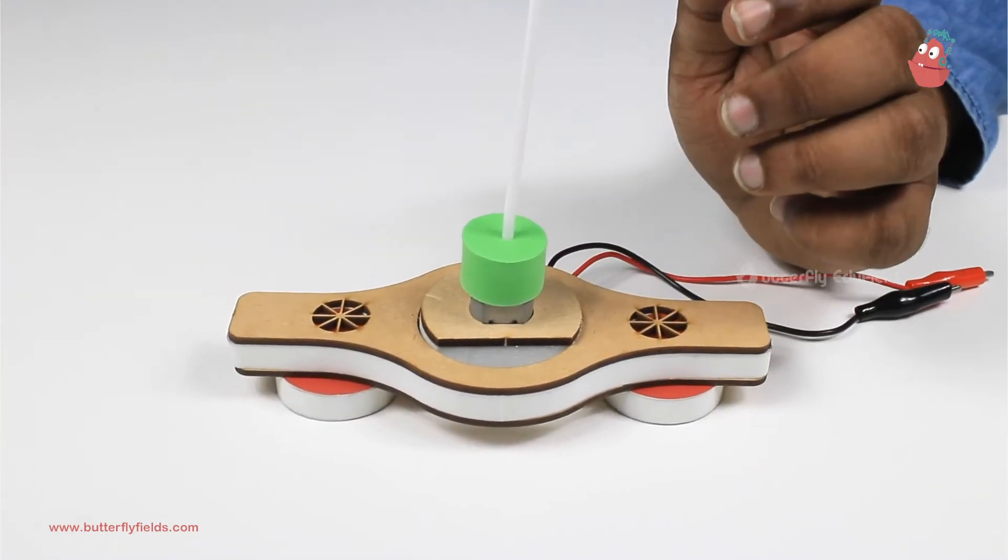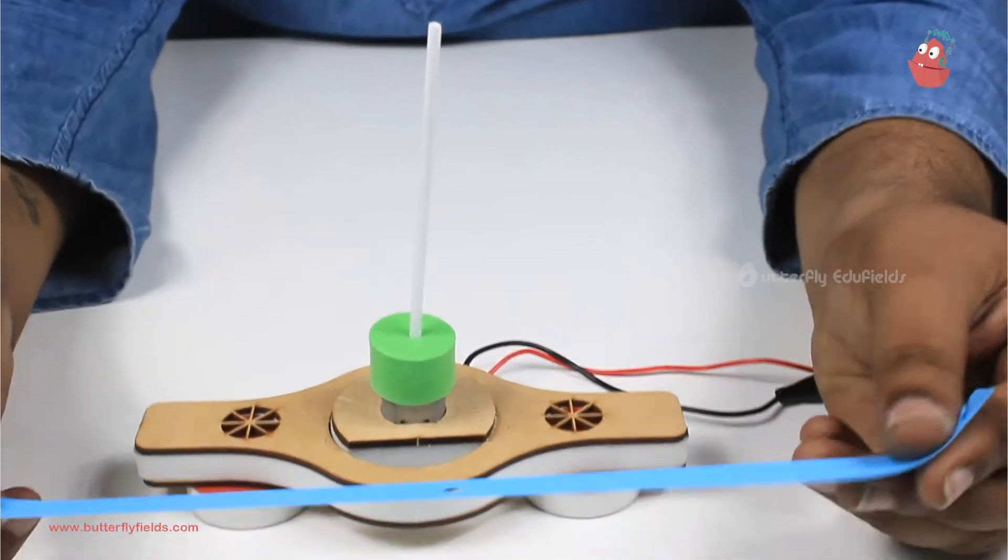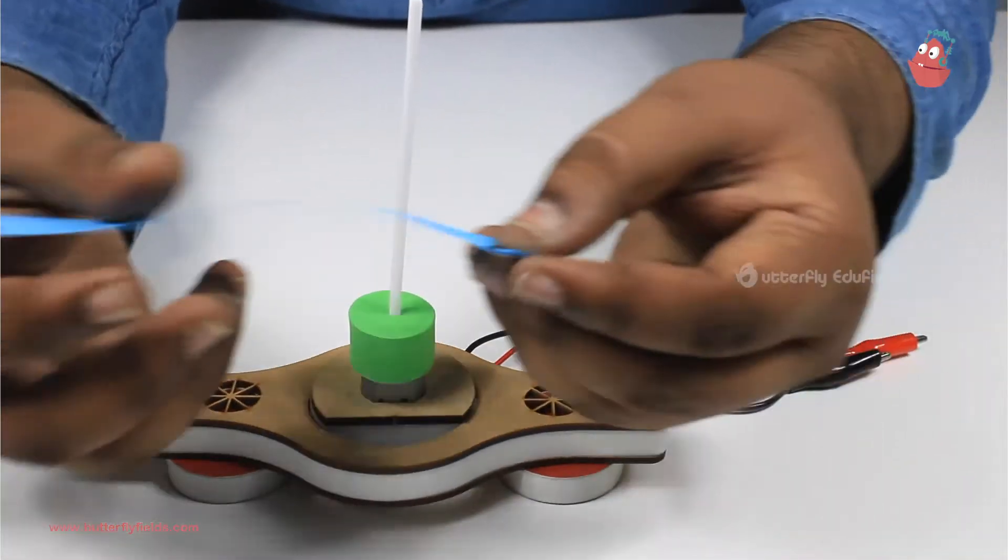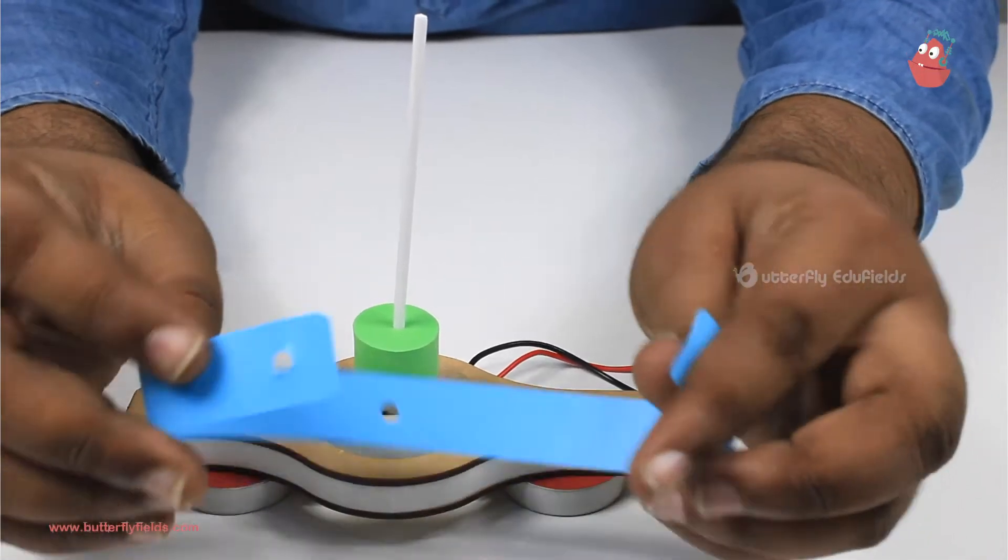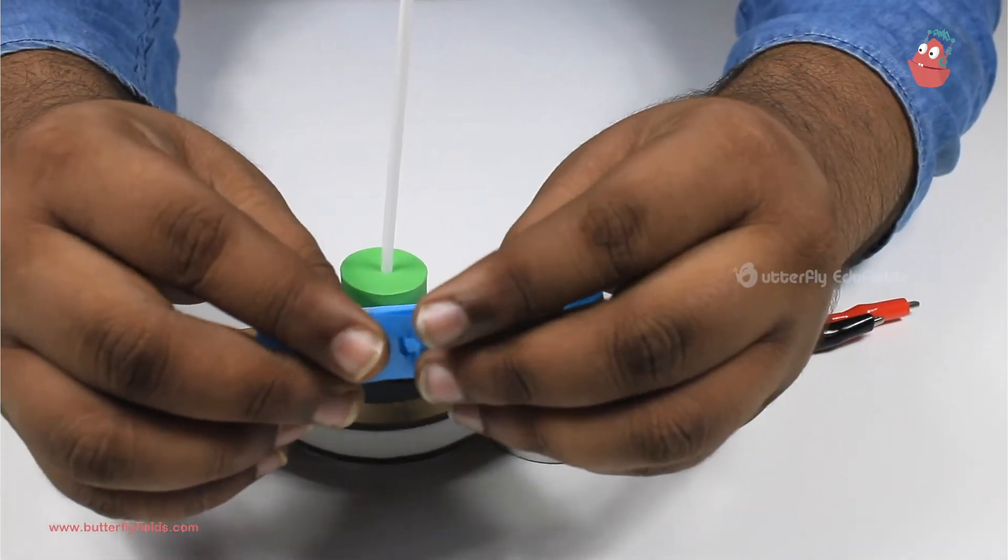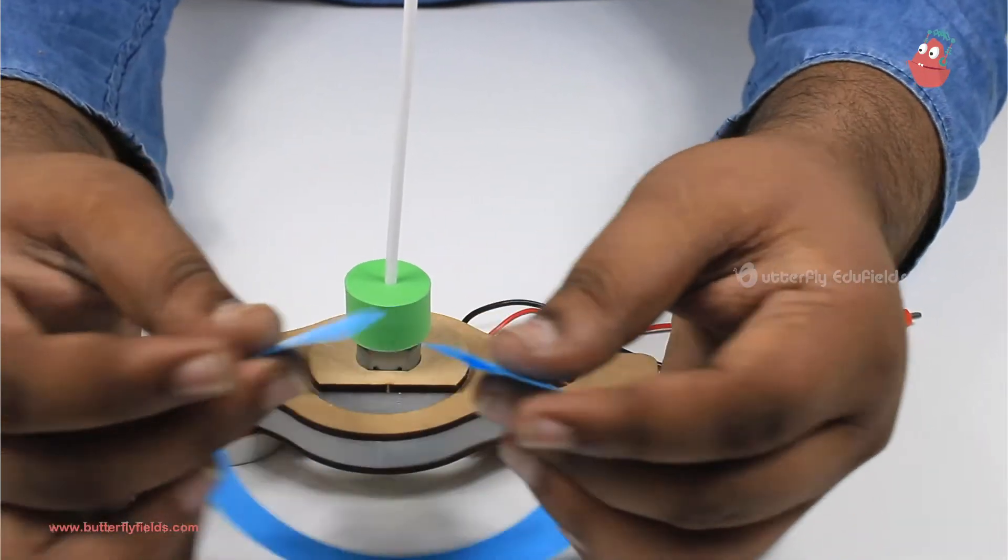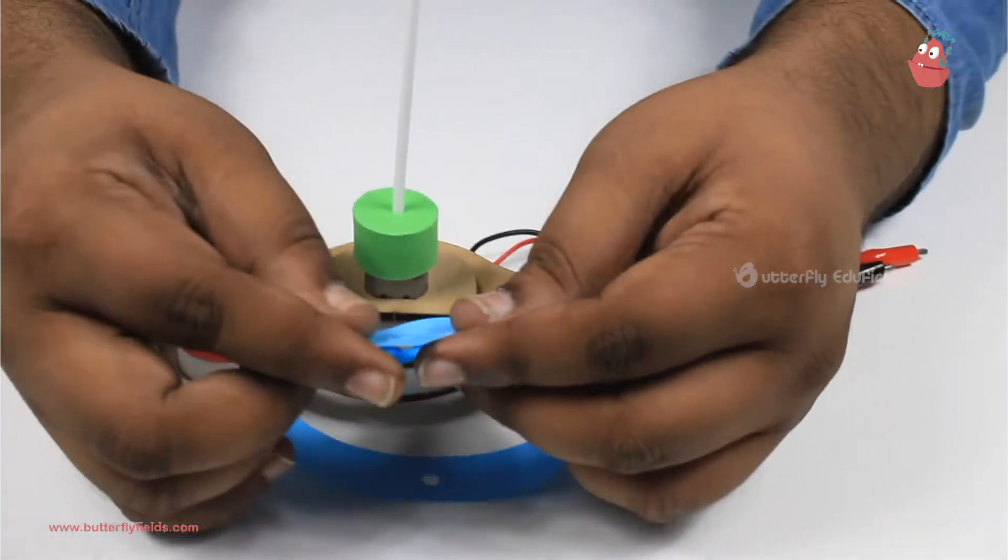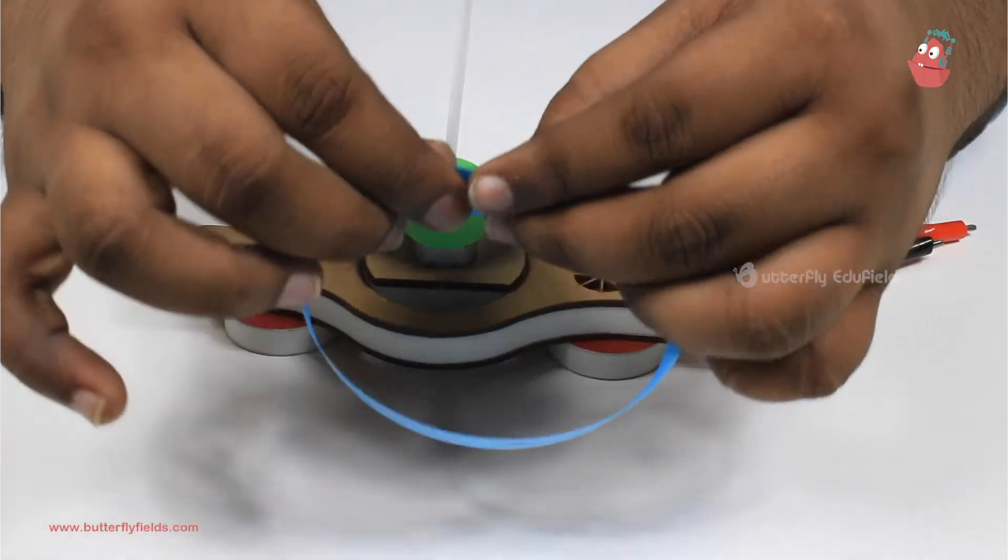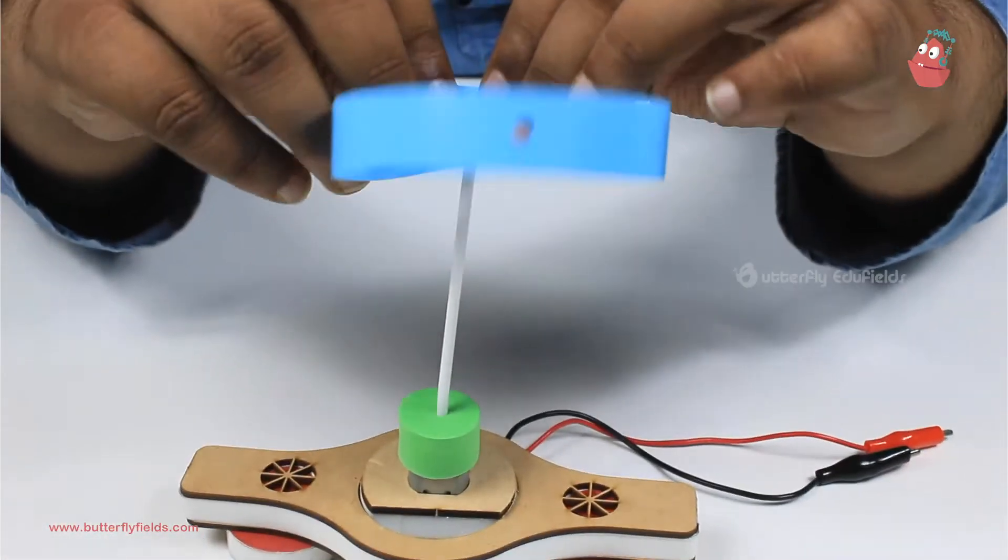Once this is done, we'll take the blue strip and curve it like this to align the two holes at the end of the strip, and then put it onto the straw.